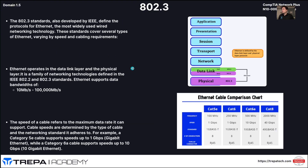Now let's talk about 802.3 — our wired standards. This is IEEE standard 802.3, which is Ethernet. Ethernet operates at the data link and physical layer, encompassing 802.2 and 802.3 standards, and supports bandwidths from 10 Mbps to 100,000 Mbps. We have an Ethernet cable comparison chart showing how the Ethernet technology encapsulates data on the wire up to the data link layer. We also have cabling standards from CAT5 to CAT8 that give us different speeds while still using Ethernet for encapsulation.